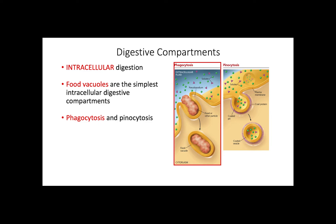But where do these processes take place? And knowing that enzymatic hydrolysis breaks down molecules that are already in the body, how do animals prevent digesting their own cells and tissues? This is where we need to look into digestive compartments for both intracellular and extracellular digestion.